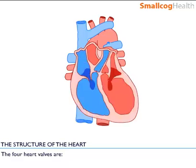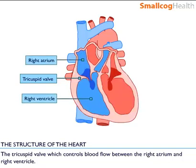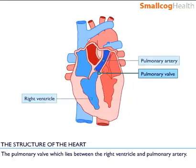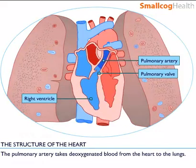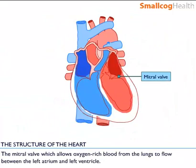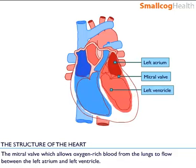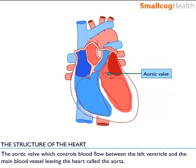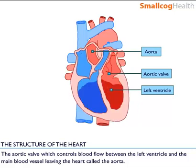The four heart valves are: the tricuspid valve, which controls blood flow between the right atrium and right ventricle; the pulmonary artery, which takes deoxygenated blood from the heart to the lungs; the mitral valve, which allows oxygen-rich blood from the lungs to flow between the left atrium and the left ventricle; and the aortic valve, which controls blood flow between the left ventricle and the main blood vessel leaving the heart, called the aorta.